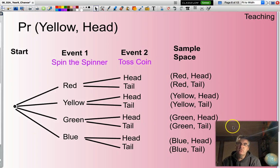So far, so good. So what I need to do to calculate the probability of a yellow followed by a head, I need to go along here and find out how many yellows followed by heads that I have. And you can see there's one here and that's it from my list.